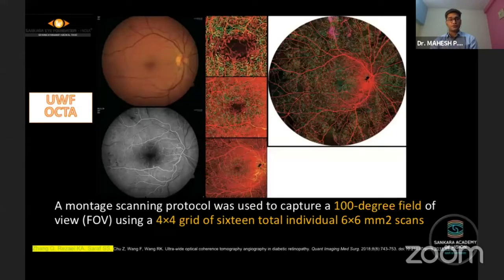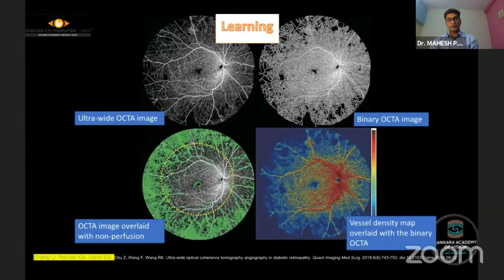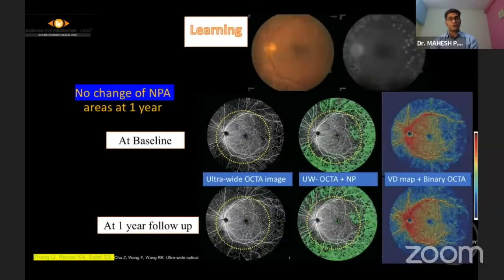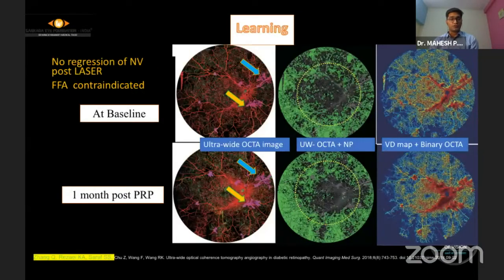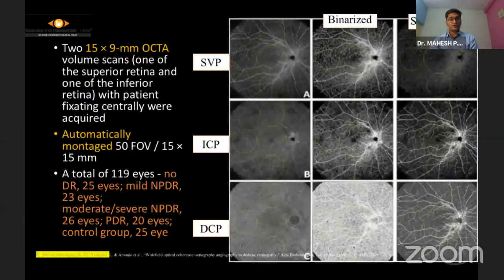Ultra-wide field OCTA can be taken using montage technique with a 100-degree field of view, which can be binarized and annotated for choroidal non-perfusion areas. Follow-up can be done to assess regression of neovascularization or non-response in patients. In cases where FFA is contraindicated, wide field OCTA provides a valuable alternative for treatment guidance.